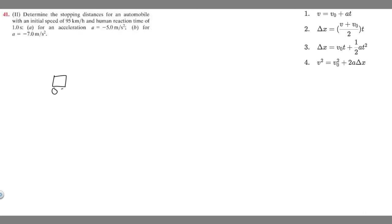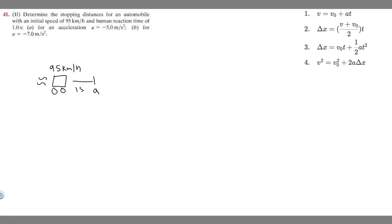We have a car moving at 95 kilometers per hour. We're trying to find out when it stops. At some distance it's going to stop, and there's a human reaction time of 1 second before pressing the brakes. So after 1 second the driver steps on the brakes, and then the car accelerates negatively all the way until it slows down. We're trying to find this whole stopping distance.